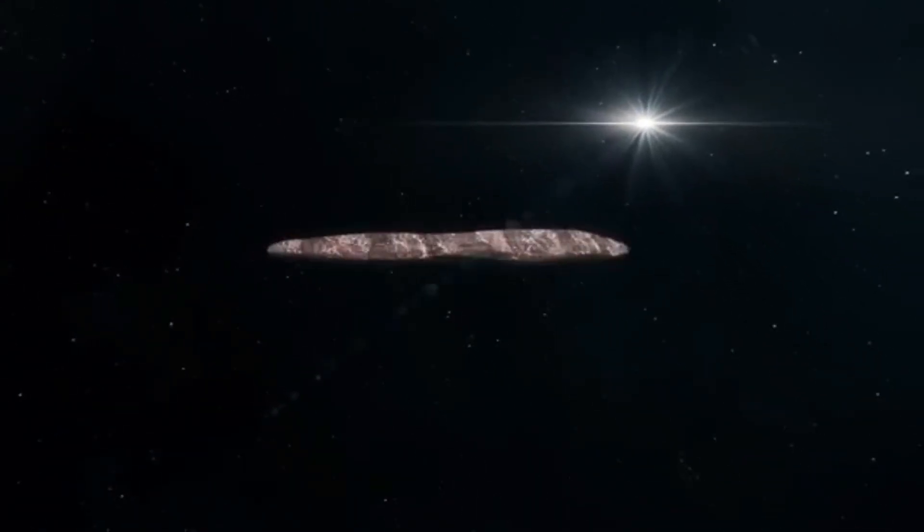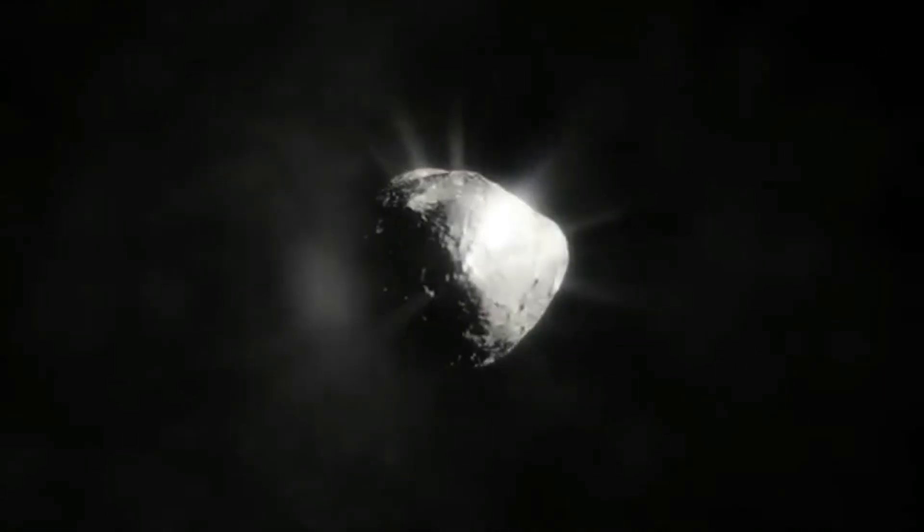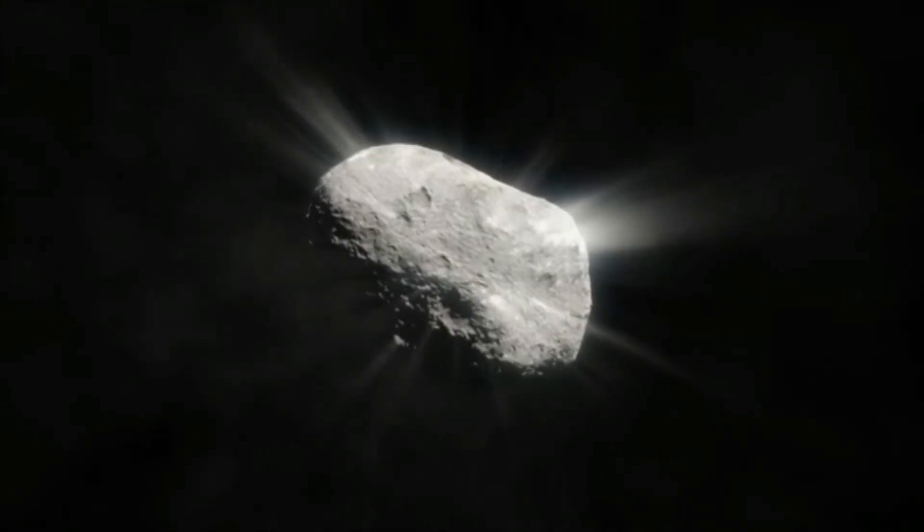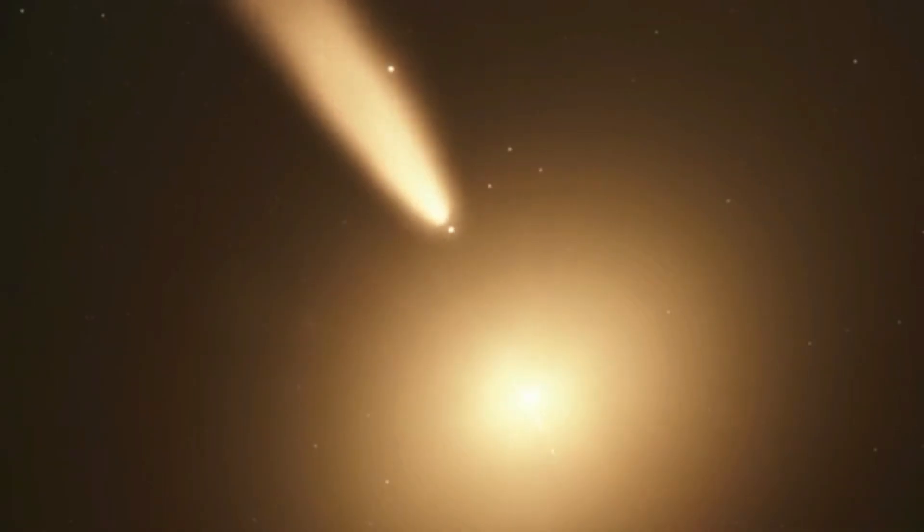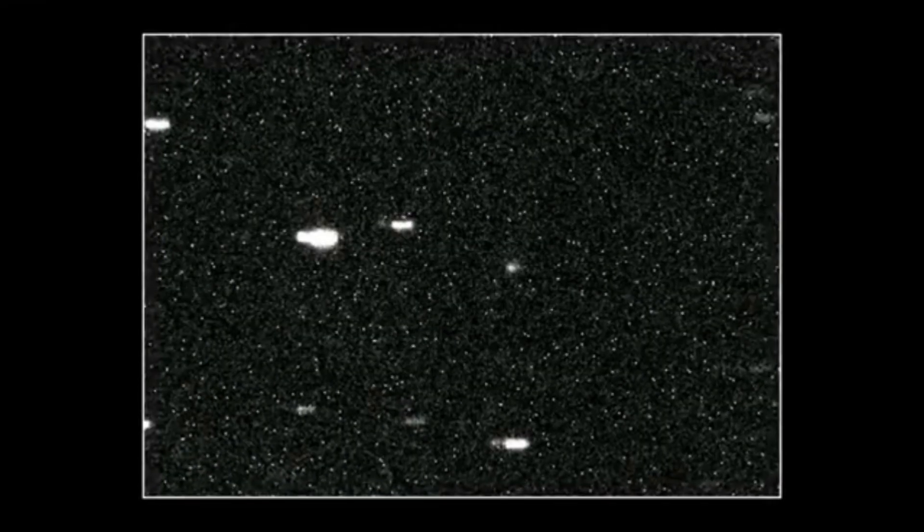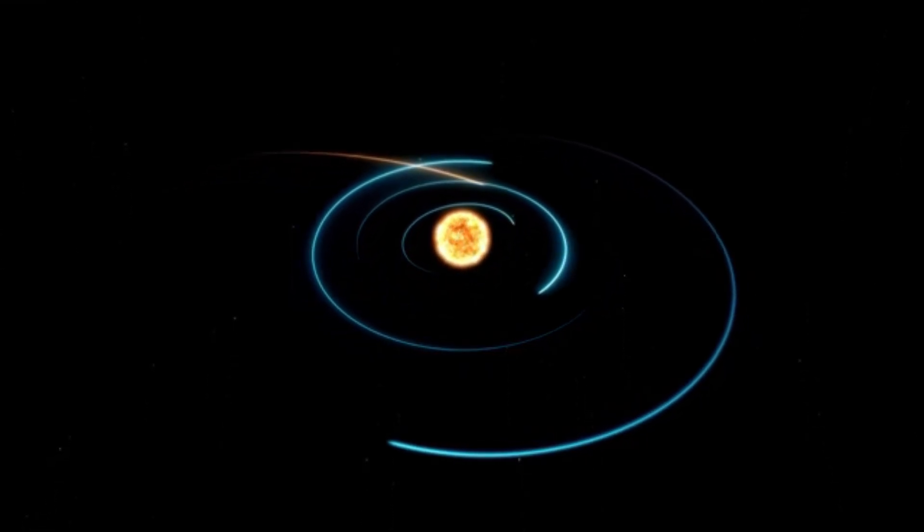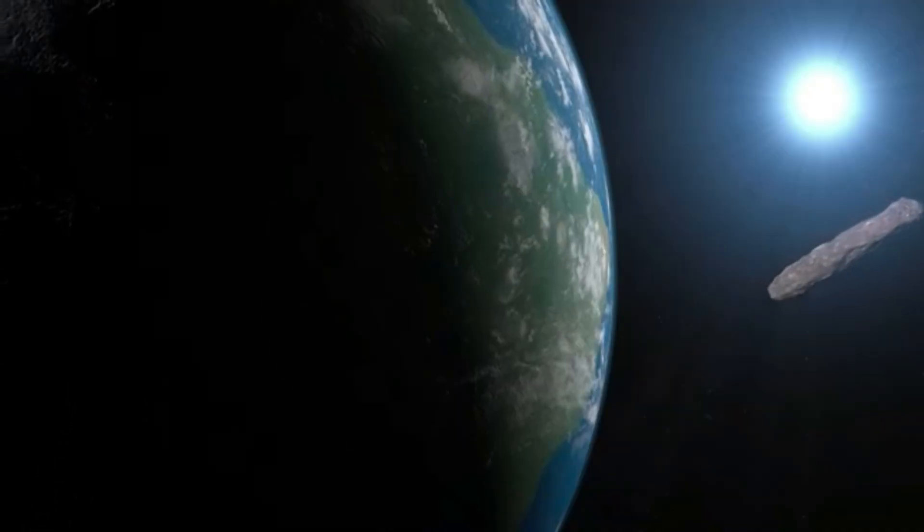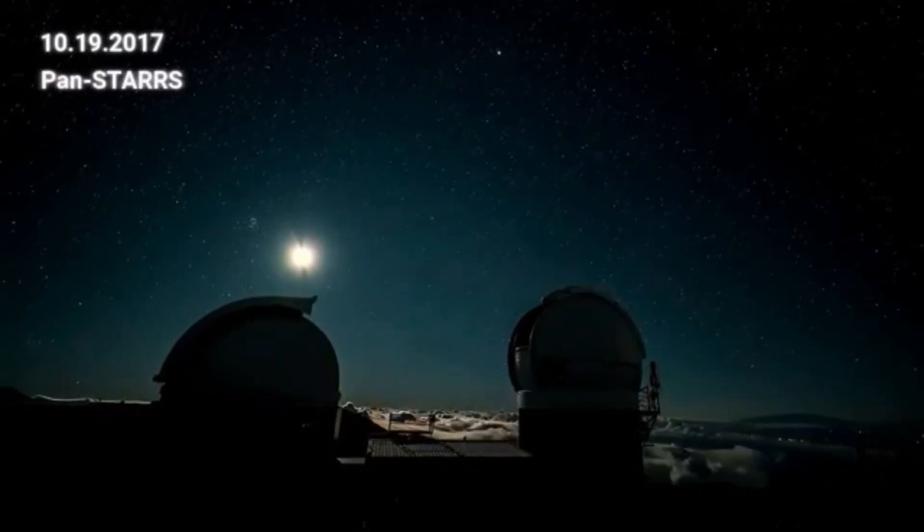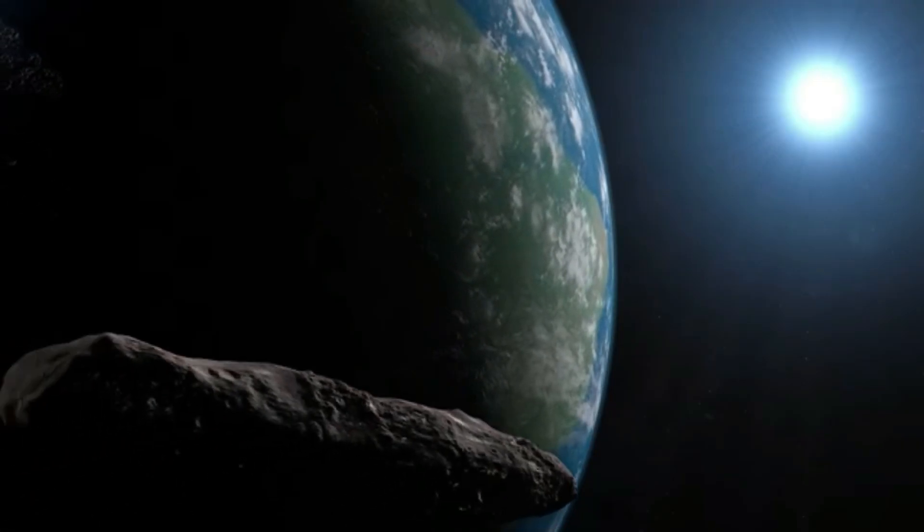Oumuamua was different: smaller, stranger, no tail, no visible gas, no heat signature. But it changed everything. Spitzer couldn't detect any infrared radiation from Oumuamua. Its shape? Possibly cigar-like, or a thin disk. Either way, it tumbled end over end. Then came the strangest part: it sped up, a subtle, unexpected acceleration that didn't fit any known comet model. No gas, no dust, no visible propulsion. Just movement. Avi Loeb again raised eyebrows by suggesting it was a light sail, a thin, reflective probe pushed by starlight. Other scientists proposed a more grounded idea: dark comets, ice bodies slowly releasing hydrogen gas invisible to telescopes. Both theories remain unproven.